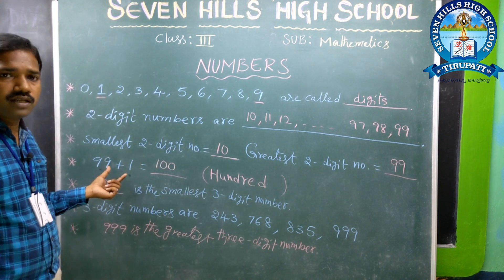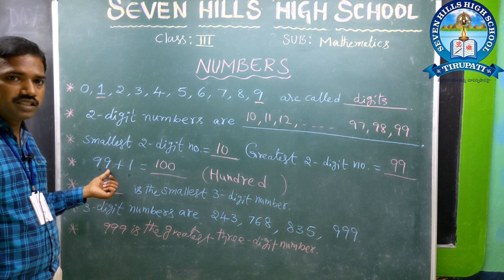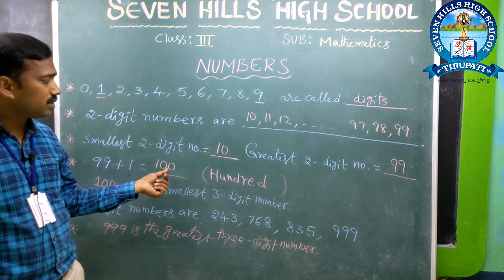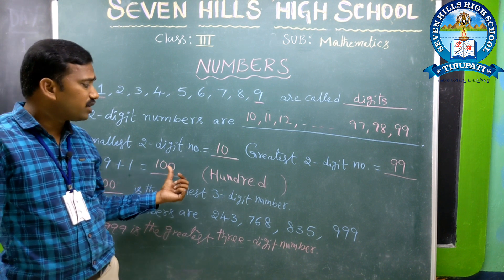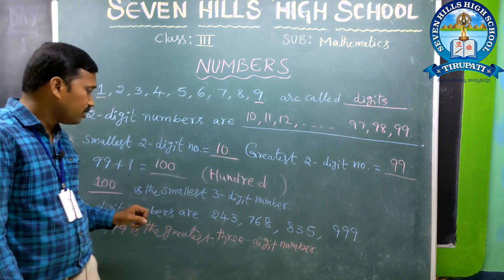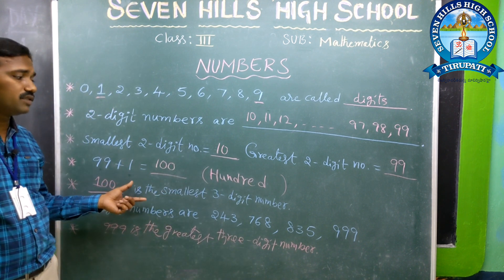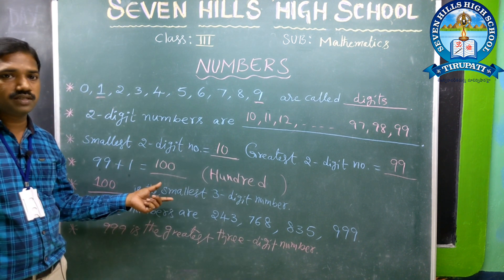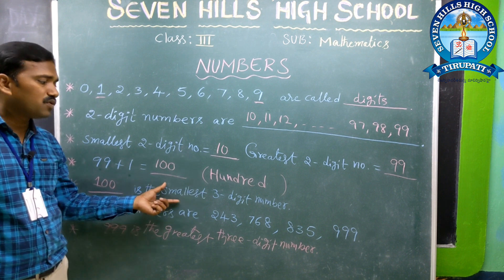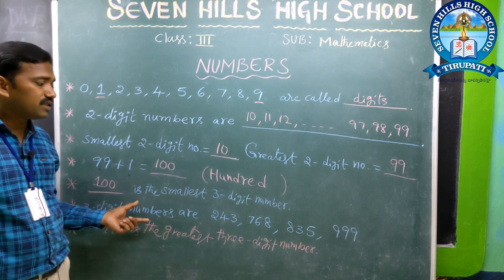By adding 1 to the greatest 2-digit number, we get 100. The numeral number name for 100 is one hundred. This 100 is called the smallest 3-digit number. 100 is the smallest 3-digit number.